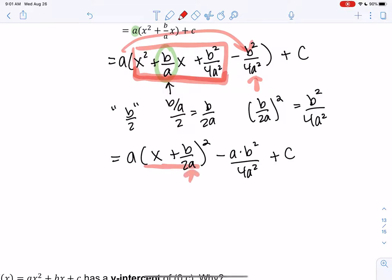And so my perfect square turns into x plus b over 2a squared. You can check that. b over 2a times b over 2a gives me b squared over 4a squared. And then the middle term would be this: b over 2a plus b over 2a will bring me to b over a.